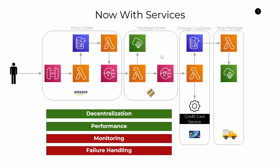Another big problem is failure handling. Say, for example, we run through this workflow — we place the order, we package the order, we get to the step where we want to charge the customer, and we fail. Maybe the customer's credit card is canceled or has a limit on it. We now need to unwind all of the things that we did in the previous sequence of events. Typically what these applications do is emit some kind of failure event, and the other services have hooks into that event and kind of self-heal themselves. But you can see there's extra work that needs to be done — it's not given for free, and you need to build additional logic and infrastructure to handle failure scenarios.